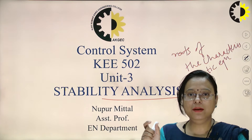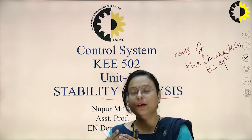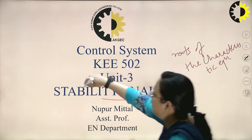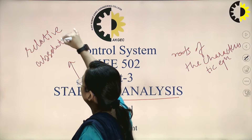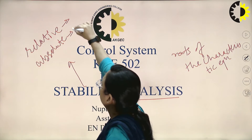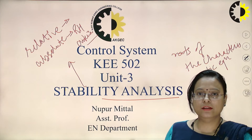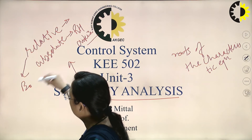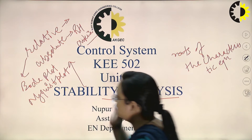The stability can be assessed — it is not always necessary to determine the roots by finding the roots of the characteristic equation. Stability is basically of two types: relative stability and absolute stability. The absolute stability can be determined using the Routh-Hurwitz criteria, which I will discuss in this lecture. The relative stability can be assessed using frequency domain methods, which include the Bode plot or Nyquist plot.